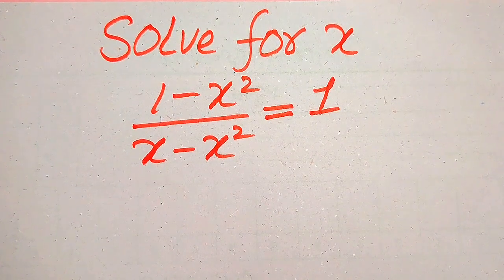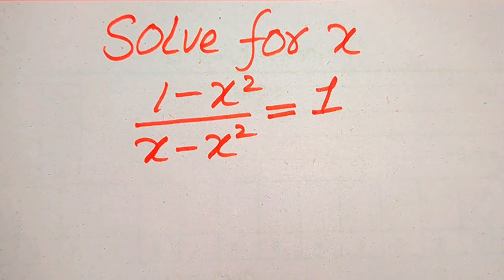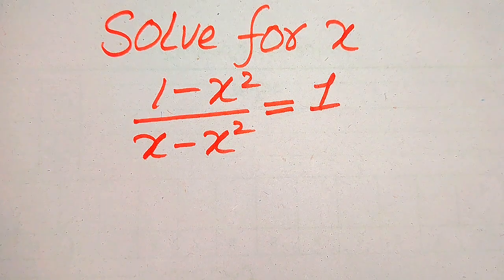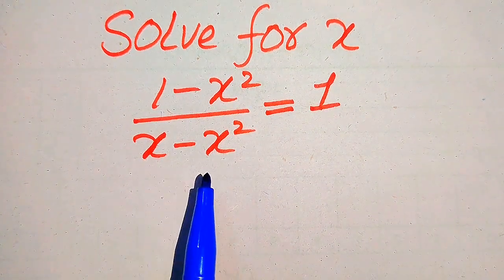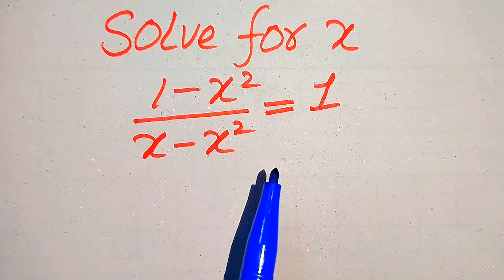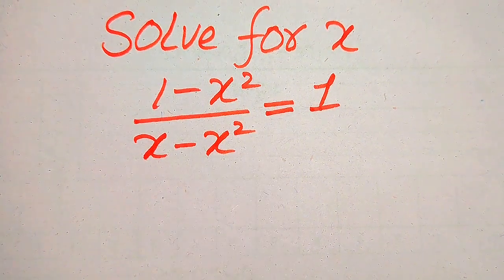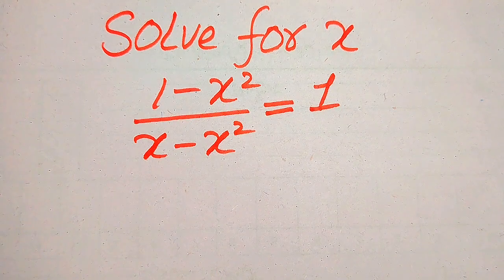Hello everyone. How to solve this problem for the values of x if we have (1 minus x squared) divided by (x minus x squared) equals 1, and we solve this problem for all the values of x.